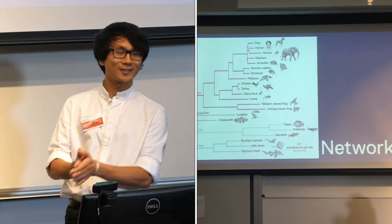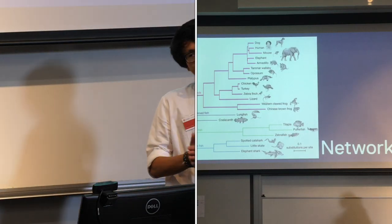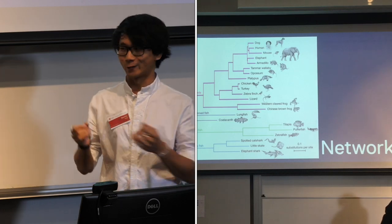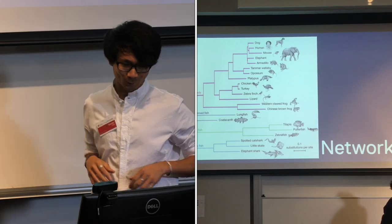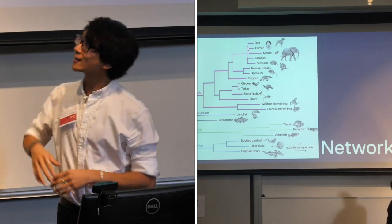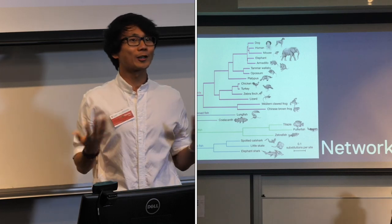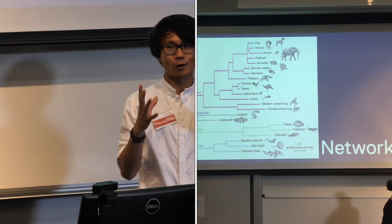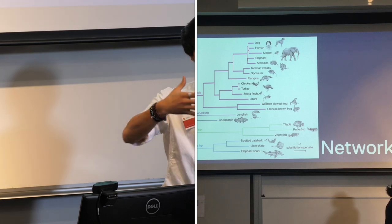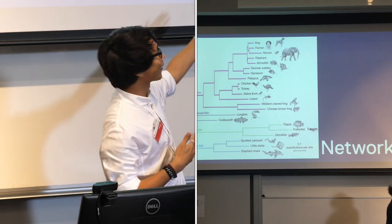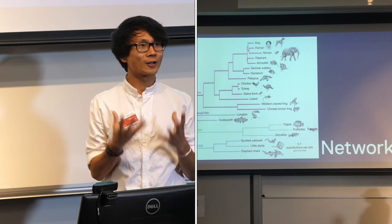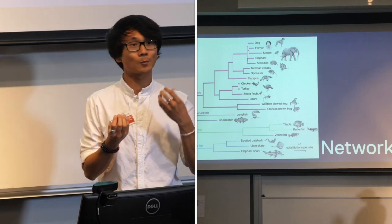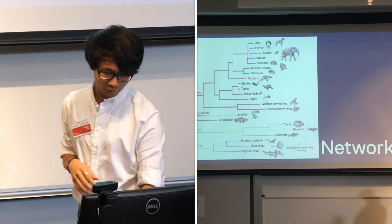Networks also occur in the natural world. In fact, we've got a lot more networks in the natural world than in the human world. Here's one: the Tree of Life. If we're trying to work out how different species are related to each other, we're using networks — trying to build that connectivity between different species based on their genetic similarities.